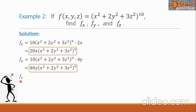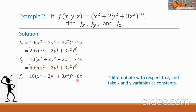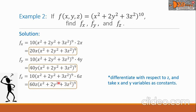Next, f sub z. We differentiate with respect to z, taking x and y as constants. By the chain rule, the derivative is 10 times the quantity (x squared plus 2y squared plus 3z squared) raised to the 9th power, times the derivative of 3z squared, which is 6z. Simplifying, 10 times 6 gives 60, so f sub z equals 60z times the trinomial raised to the 9th power.